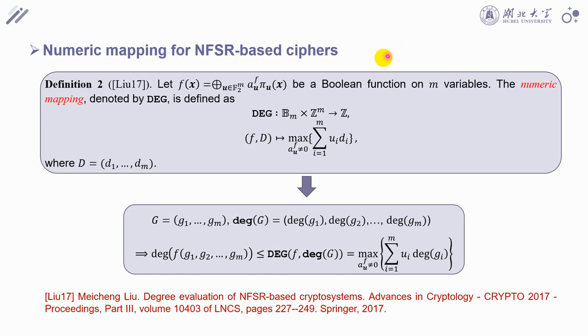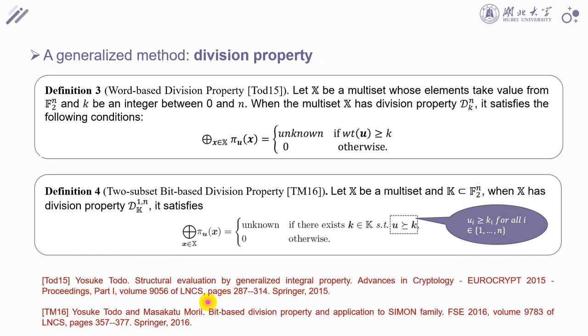For NFSR-based ciphers, Liu proposed the numeric mapping method especially for trivium-like ciphers. An efficient algorithm based on numeric mapping was given. The last one is division property.